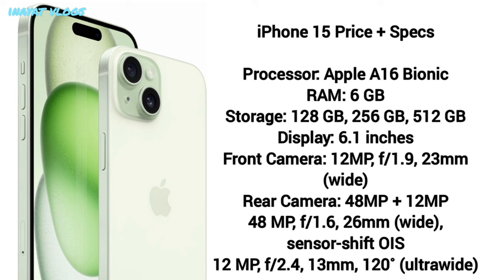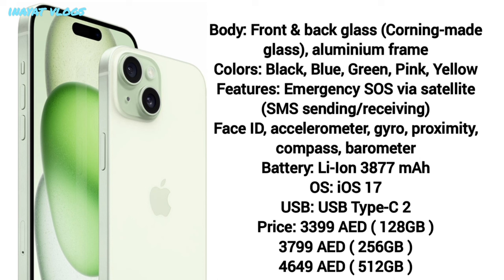Now we'll talk about the iPhone 15 specs and price in Dubai. Its processor is the Apple A16 Bionic with 6GB RAM. Storage options are 128GB, 256GB, and 512GB. The display is 6.1 inches. The front camera is 12 megapixel, f/1.9, 23mm wide. The rear cameras are 48 megapixel and 12 megapixel — the 48MP is f/1.6, 26mm wide with sensor-shift OIS for image and video stabilization. The second camera is 12 megapixel, f/2.4, 13mm, 120-degree ultra wide. The front and back glass is Corning glass with an aluminum frame.